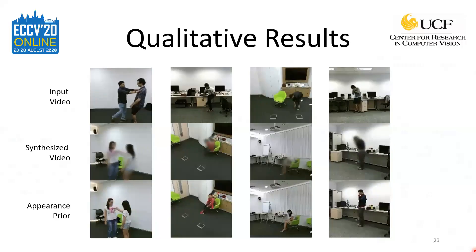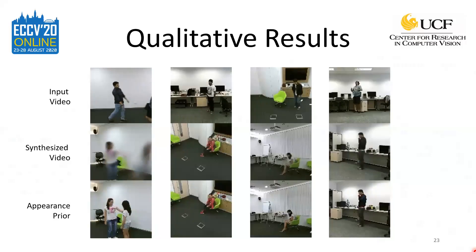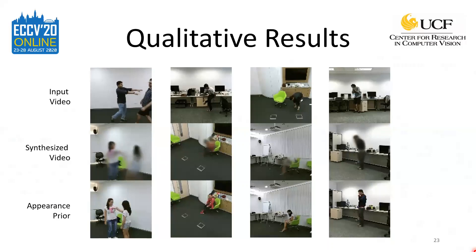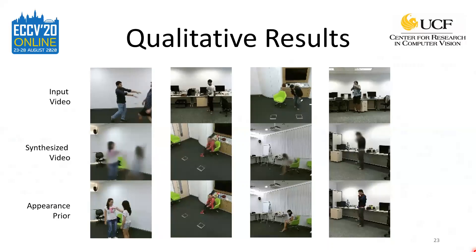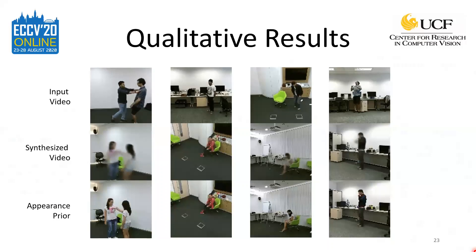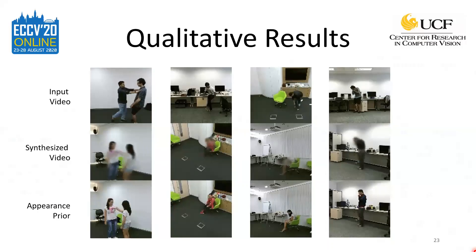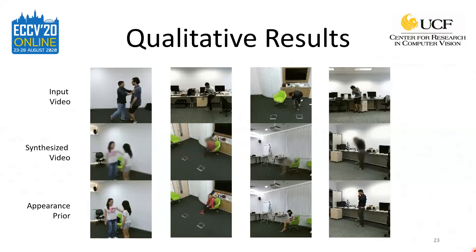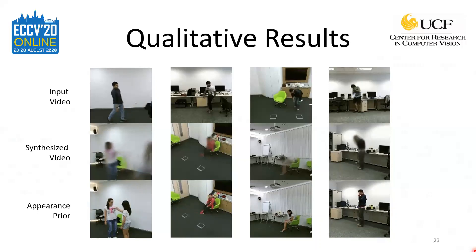One of the benefits to using an appearance prior is that our network can synthesize a video with an entirely different appearance than the input video. Here you'll see four examples of this, where the videos on top are again the input, those in the middle the synthesized videos, and the bottom row shows the single frame used as the appearance prior. These examples show that our network is capable of synthesizing videos with different actors, different backgrounds, and even different actor positions.